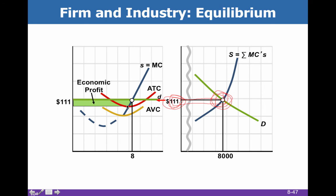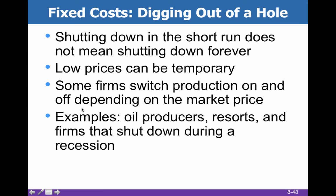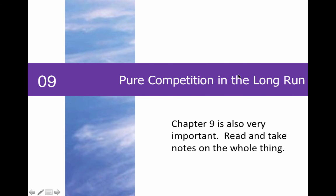Sometimes demand shifts leftward — think VCRs when DVD players came out. Now we have a new lower price. At this new intersection of marginal revenue and marginal cost, we're above average variable cost so we'll produce, but we're below average total cost, so this becomes a period of economic loss. Should we shut down? Shutting down for a bit doesn't mean shutting down forever, because low prices can obviously be temporary.